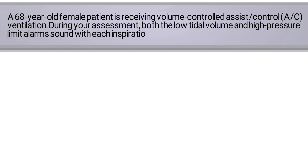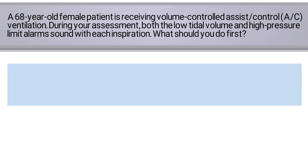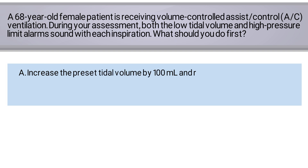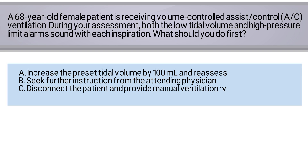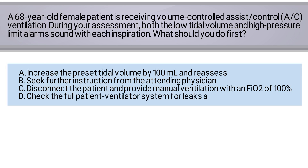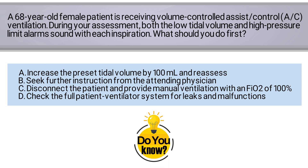In this case, what should you do first? A: increase the preset tidal volume by 100 milliliters and reassess; B: seek further instruction from the attending physician; C: disconnect the patient and provide manual ventilation with an FiO2 of 100 percent; or D: check the full patient-ventilator system for leaks and malfunctions. Do you know the answer?